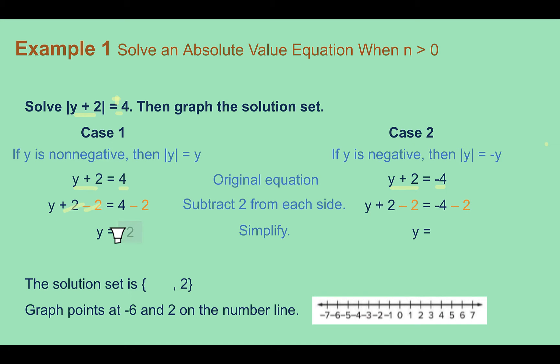Subtracting 2 from both sides gives y equals 2. Solving the other case, subtracting 2 from both sides gives y equals negative 6. So the solution set is {negative 6, 2}, which we graph as two points on the number line. Notice that you end up doing the same steps for both cases — you just start with a different number on the right side, but the solving process is the same.